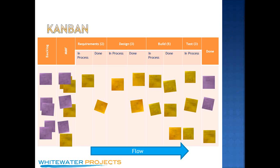You pull an MMF — a minimally marketable feature — into the starting column and break it down into the stories that make it up. Minimally marketable features are probably bigger than your typical Scrum story, though they don't have to be. The reason you don't break it down into tasks is that the columns are what your tasks would be — requirements definition, design, build, testing, and then done. You flow the stories through in-progress to done, in-progress to done.